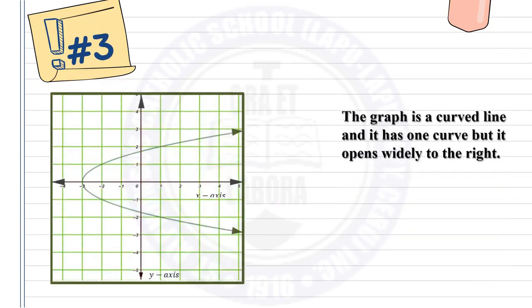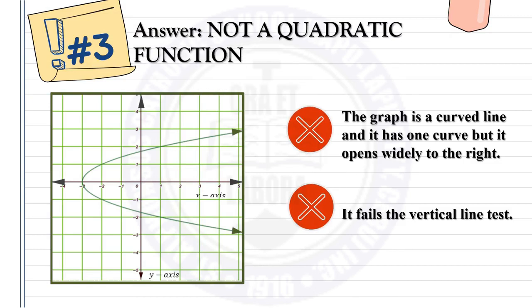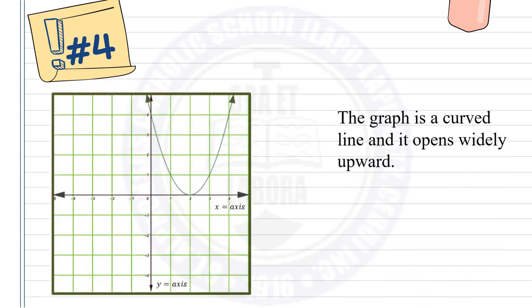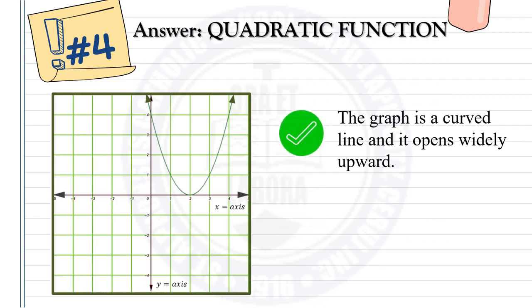Example number 3: the graph is a curved line with one vertex, but it opens widely to the right and fails the vertical line test, so it is not a quadratic function. Example number 4: the graph is a curved line that opens widely upward, so it is an example of a quadratic function.